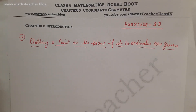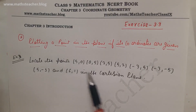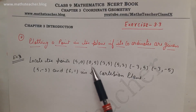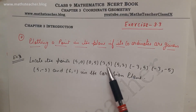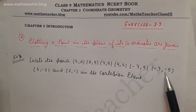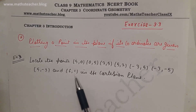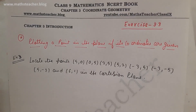I'll take example number 3. Example 3: locate the points (5, 0), (0, 5), (2, 5), (-3, 5), (-3, -5), (5, -3), and (6, 1) in the Cartesian plane. If you understand this example, then whenever you are given any coordinates you can easily plot them.